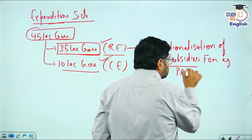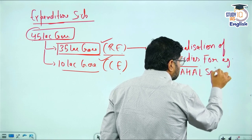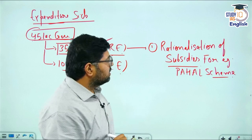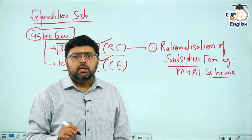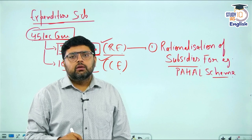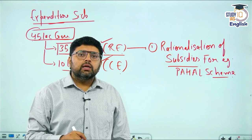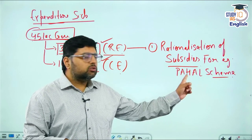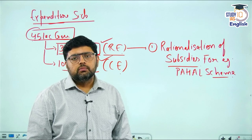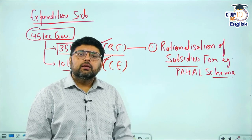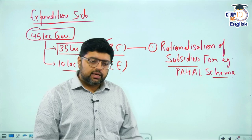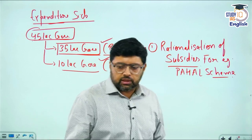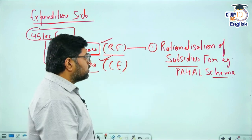Under the PAHAL scheme, before 2014-15 citizens enjoyed subsidies on an unlimited number of cylinders. But after 2014-15, the government introduced this scheme where you enjoy subsidy on a limited number of cylinders — 7 or 8 cylinders. If you purchase more than that in a financial year, the government will not give you a subsidy. This is the best example of rationalization of subsidies.